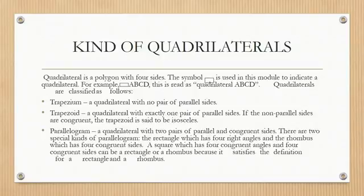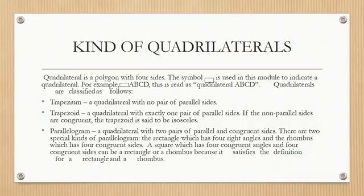Kinds of Quadrilateral: A quadrilateral is a polygon with four sides. The rectangle symbol is used in this module to indicate a quadrilateral. For example, rectangle ABCD is read as Quadrilateral ABCD. Quadrilaterals are classified as follows.